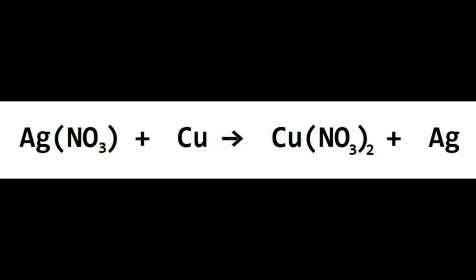For the silver nitrate and copper reaction: on the left, one silver, one nitrate, one copper. On the right, one copper, two nitrates, one silver. What's out of balance? Nitrates. So we put a 2 in front of AgNO₃ on the left — that gives two nitrates. But now we've also changed our silvers to two, so we put a 2 in front of Ag on the product side. Done.